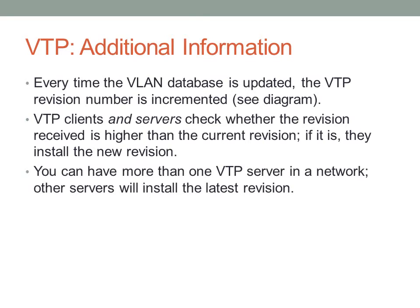You can have more than one VTP server in a network. For example, with five switches, you could make all five VTP servers. If you make a change on one switch, it increments the revision number, and all other switches look at that new higher revision number and accept it. This can be done on any switch in the network.